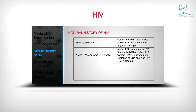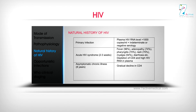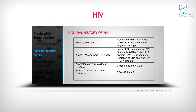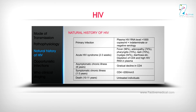Asymptomatic chronic illness lasts approximately 8 years with gradual decline in CD4. This is followed by symptomatic chronic illness lasting 1–3 years, with CD4 less than 200 per mm³, leading to death at 10–11 years in untreated individuals.